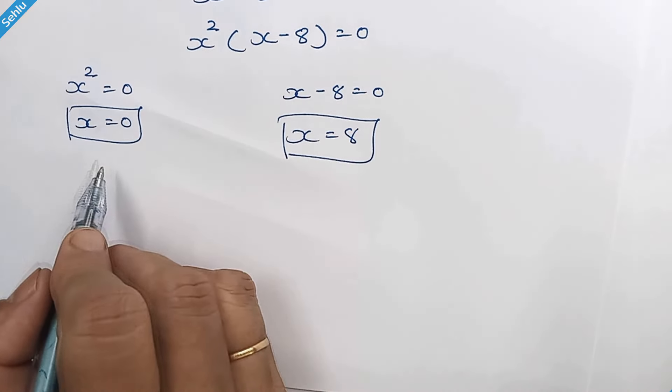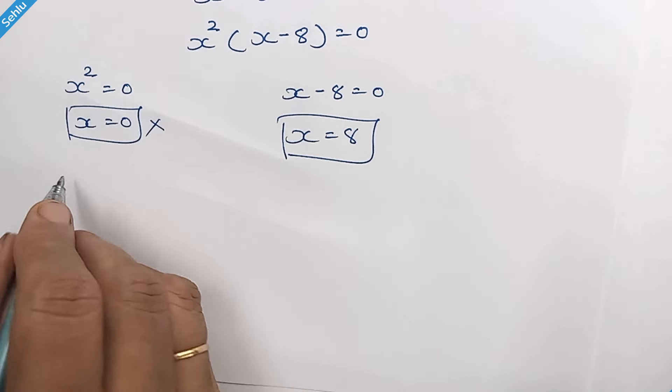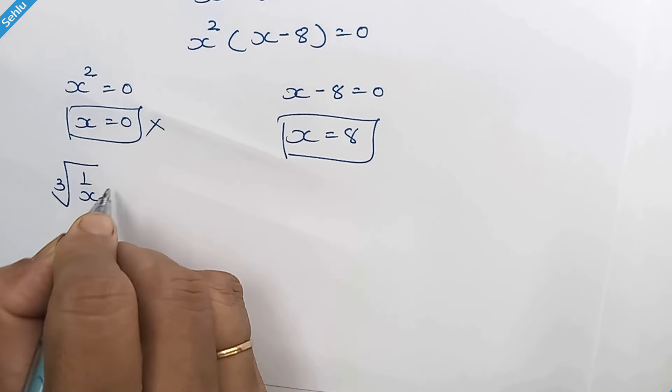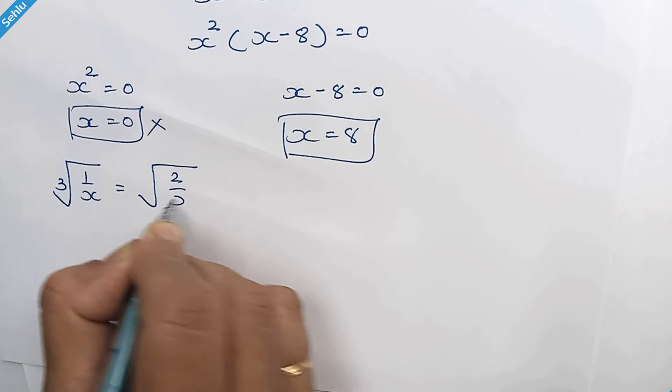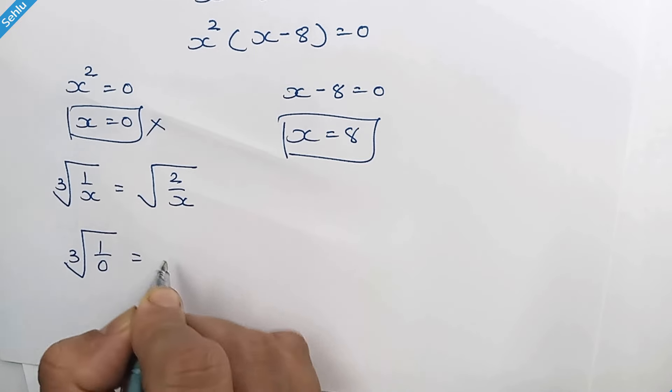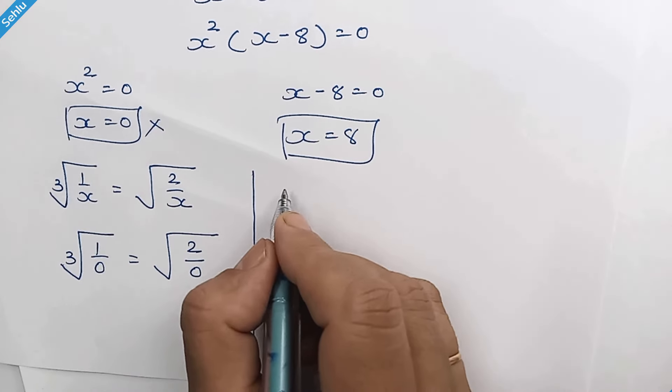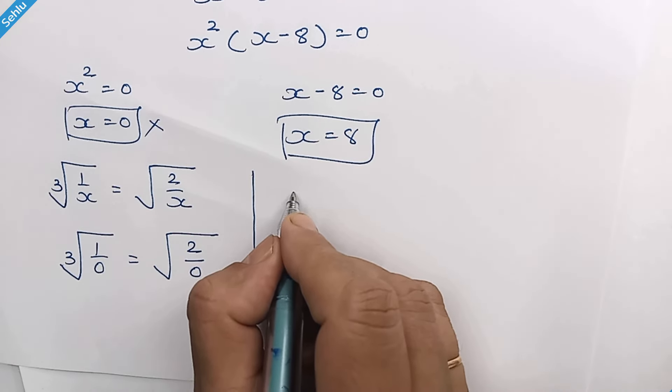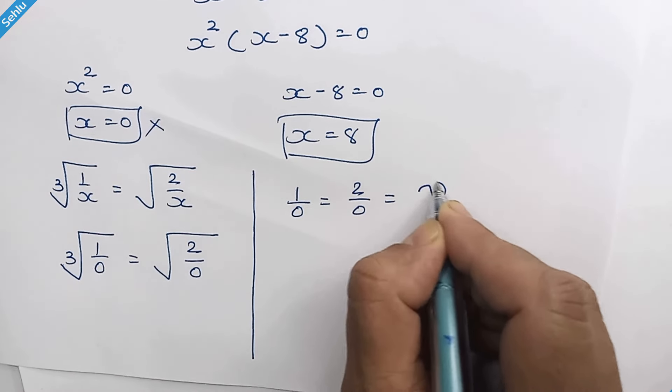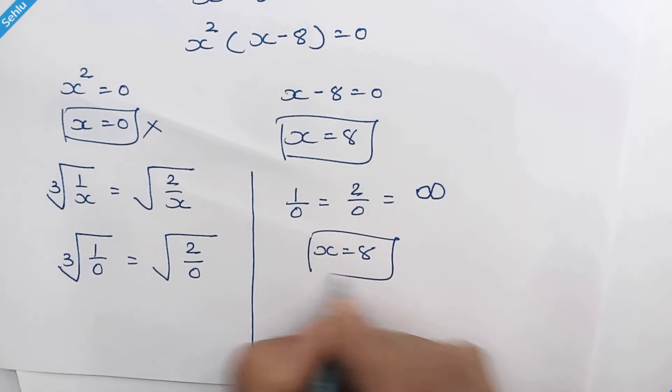Now if we verify the answer x is equal to 0, this cannot be true. Here is why. The question is cube root of 1 over x is equal to square root of 2 over x. So cube root of 1 over 0 is equal to square root of 2 over 0. So it will be 1 over 0 is equal to 2 over 0 is infinity. So x is equal to 8 is the only valid answer.